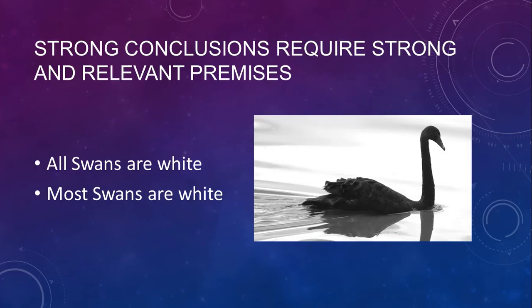Strong conclusions require relevant, strong premises. Here are two conclusions — one substantially stronger than the other. If you want to prove that all swans are white, you have to do a lot more work than proving most swans are white. For 'most swans are white,' you can do a statistical study with large populations and establish it with relative certainty. For 'all swans are white,' you have to somehow show there are no non-white swans — a much stronger claim.